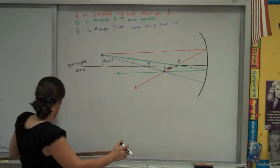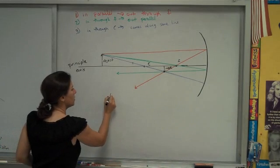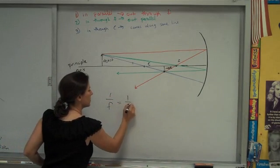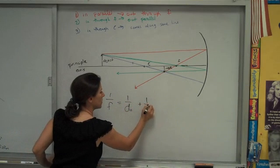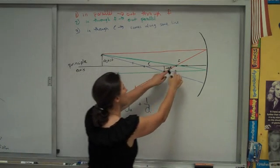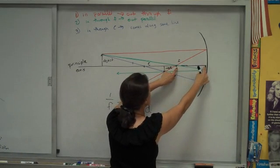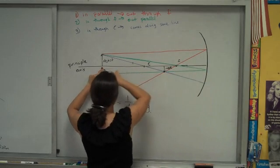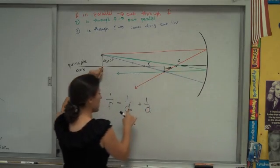If you want to confirm this mathematically, you could use this equation by presumably measuring what f is, measuring the object distance to the mirror, that's dL.